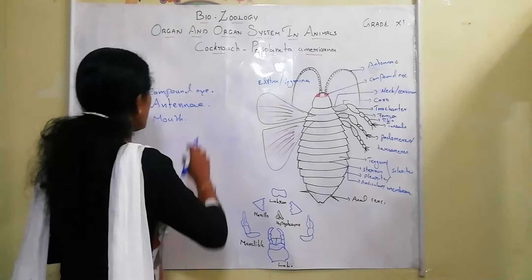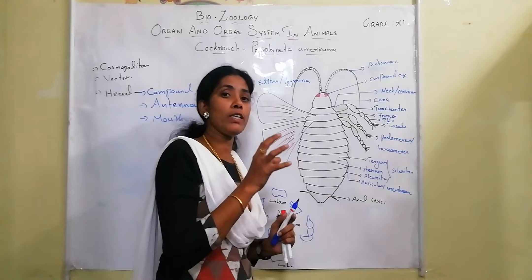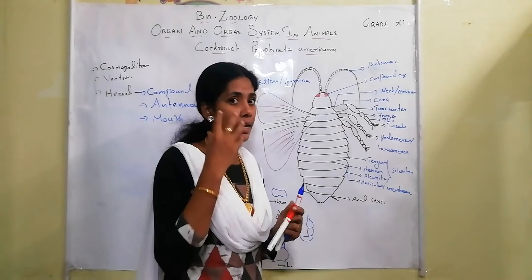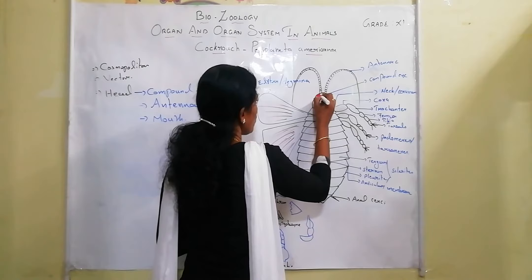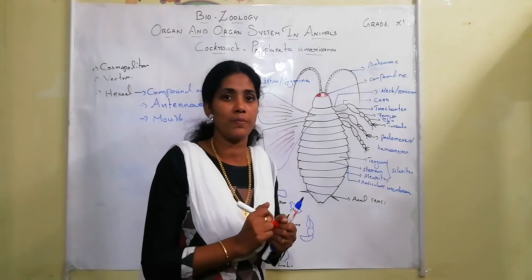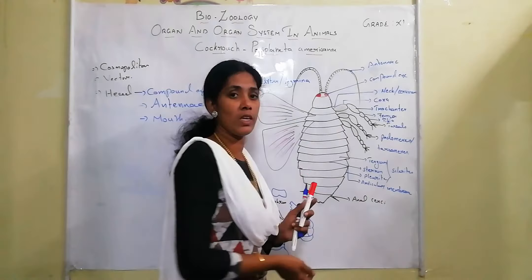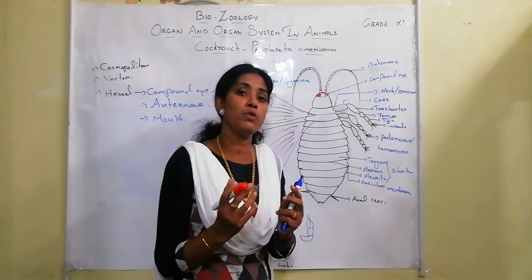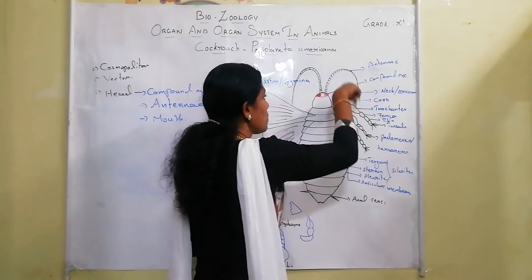The head consists of large compound eyes. It is called compound because it is not a single eye like ours — within one eye, there are many small eyes composed together. Next, there is a pair of long antennae, which is sensory and used to observe environmental changes like temperature.